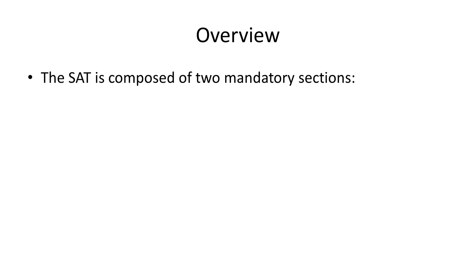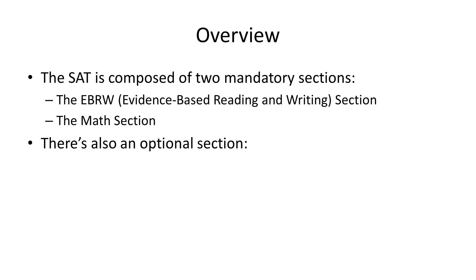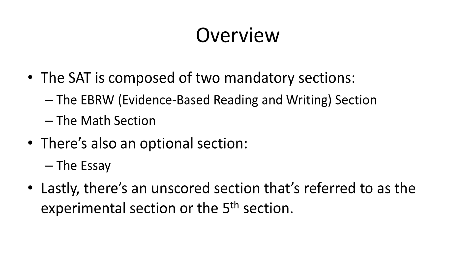There are two mandatory sections: the EBRW or Evidence-Based Reading and Writing section, and the Math section. There's also an optional section, which is the essay. Lastly, there's an unscored section referred to as the experimental section or the fifth section.